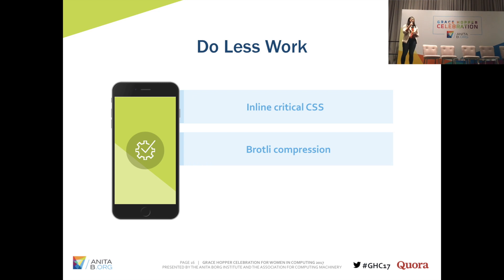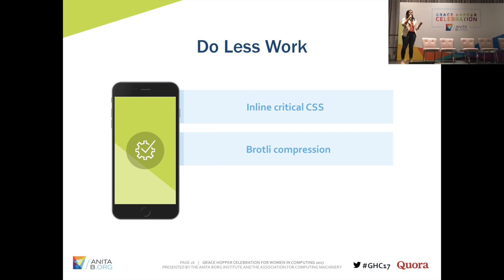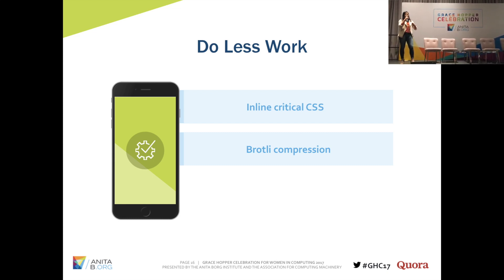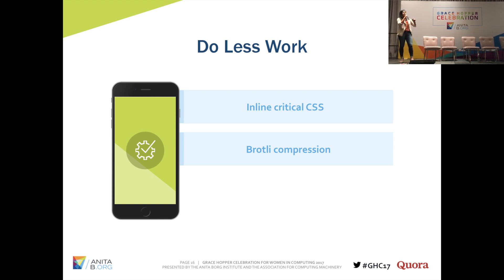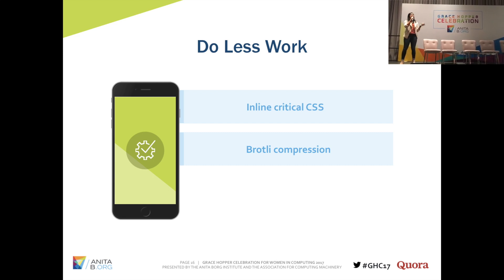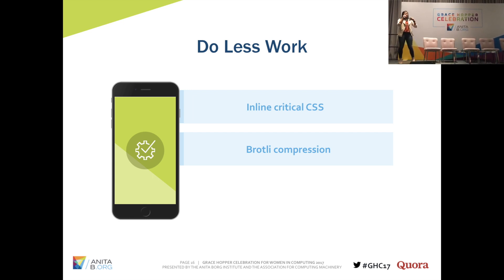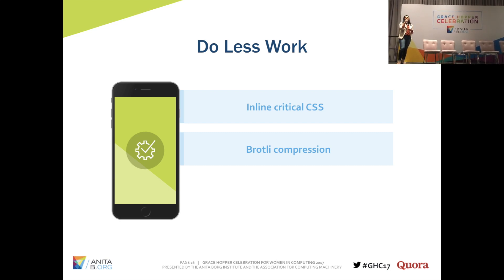The second technique is Brotli compression. By default, most servers gzip the HTML content before sending it to the user, whose browser decompresses it natively. If you simply swap gzip for Brotli — a compression algorithm open-sourced by Google — you immediately get a 20% size reduction on all your static content: HTML, JavaScript, and CSS just become 20% smaller with no other changes. That means users download less data, and on mobile with a bad connection they can still see your content much faster.